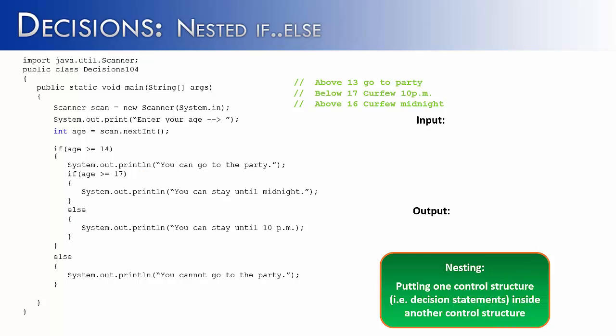Now let's see what happens if we try 18. 18 is greater than or equal to 14, so that's true. It prints you can go to the party. Then it checks if 18 is greater than or equal to 17. Yes it is, so because that condition is true, it prints you can stay until midnight.